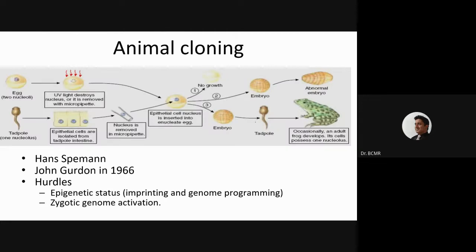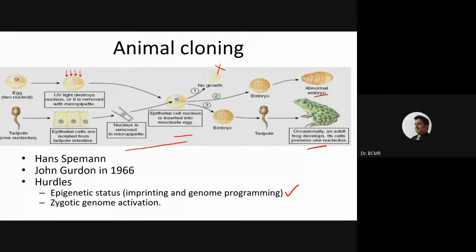We discussed first about animal cloning, and why we are discussing all this is because many times when we do animal cloning, sometimes they die out, sometimes there is abnormal growth, and occasionally they give rise to living organisms but they have some problems. Majority of the problems are because of epigenetic issues. Therefore, what happens during early development and how epigenetics plays a role is what we need to understand.